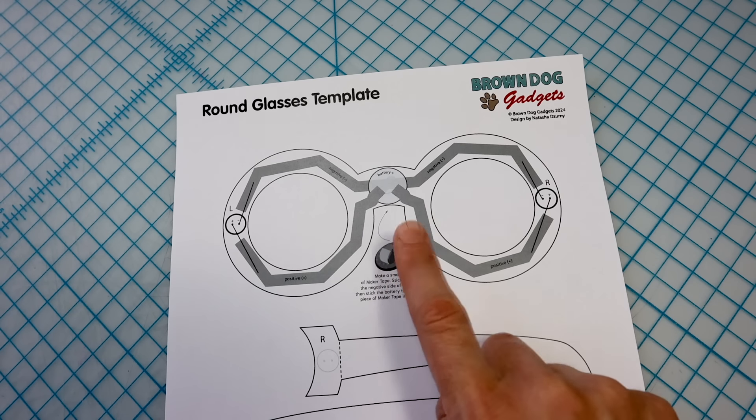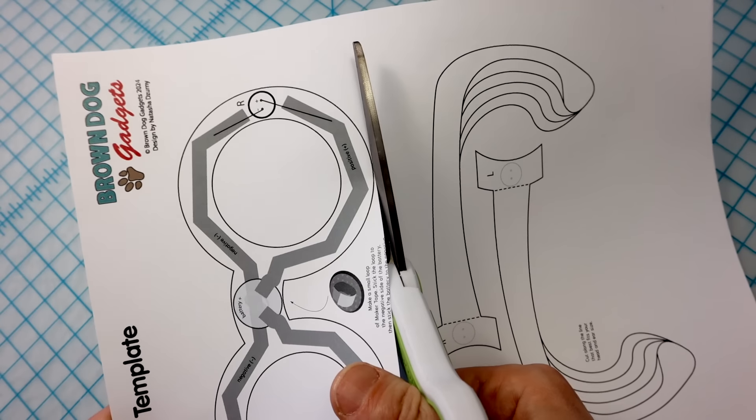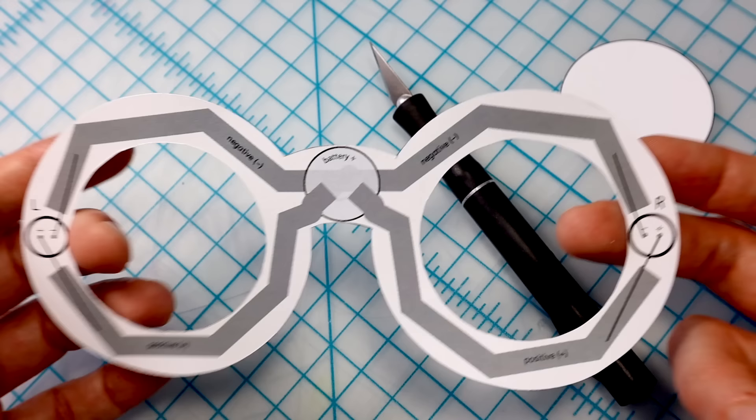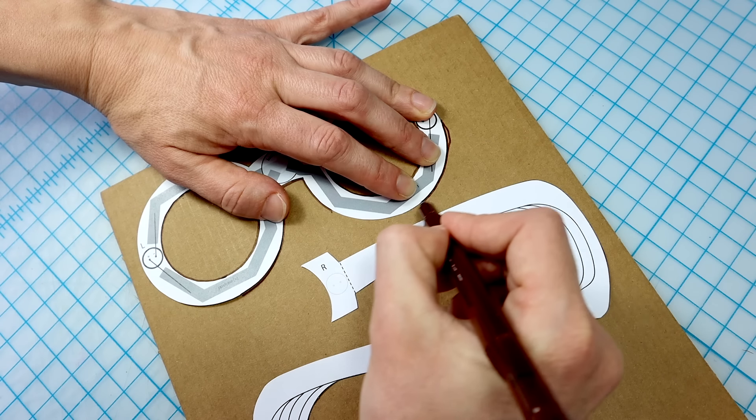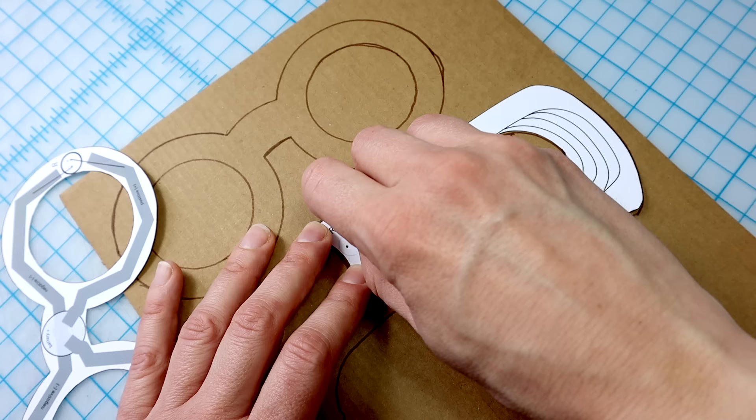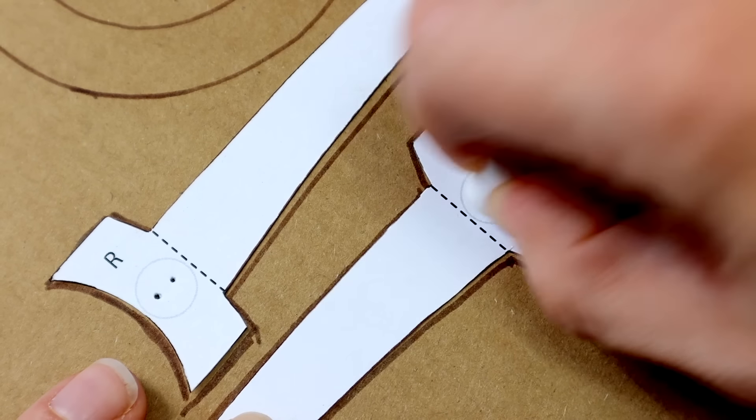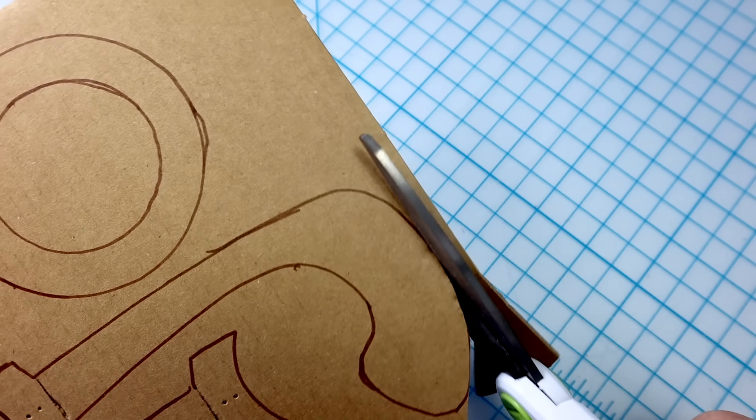First, choose your frame shape and print out the template. Cut it out using scissors and a craft knife for the interior shapes. Trace the template onto your cereal box or cardboard. Then use a pin to poke holes where the LEDs will go, then mark the fold lines too. Now cut out the shapes.